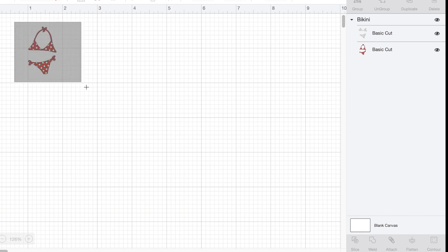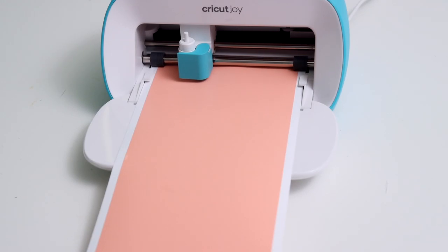I wanted to make an assortment, so I went ahead and searched for Bikini and I thought this was so cute. You can see here though that it's two layers, so I'm going to drag my cursor over this whole thing and then hit this Weld button down on the bottom right and that's going to make it one cut.